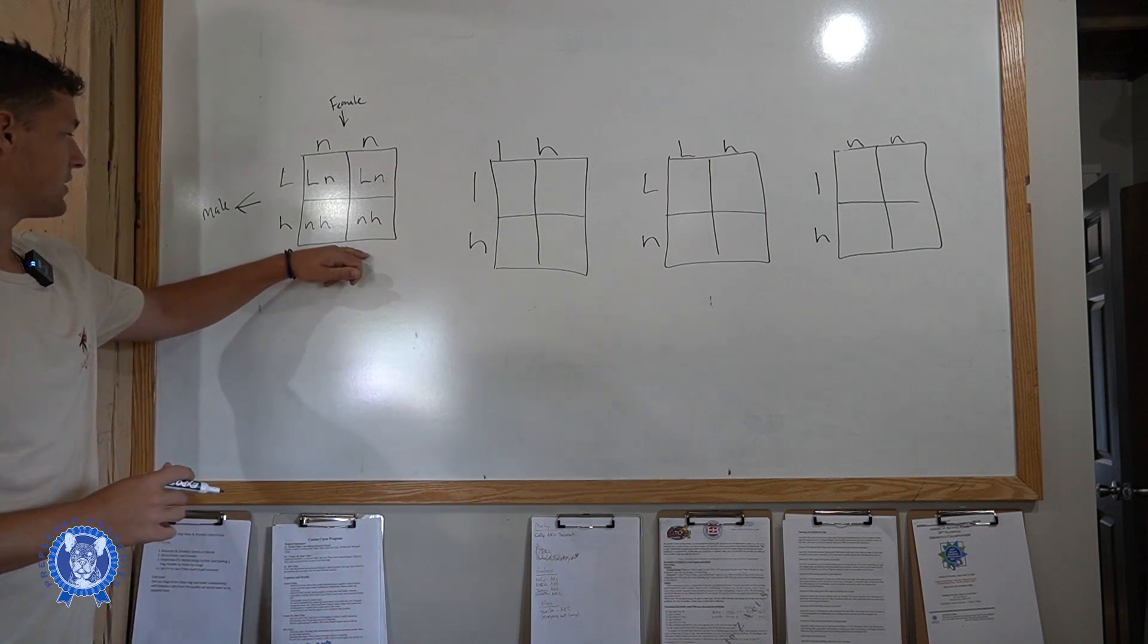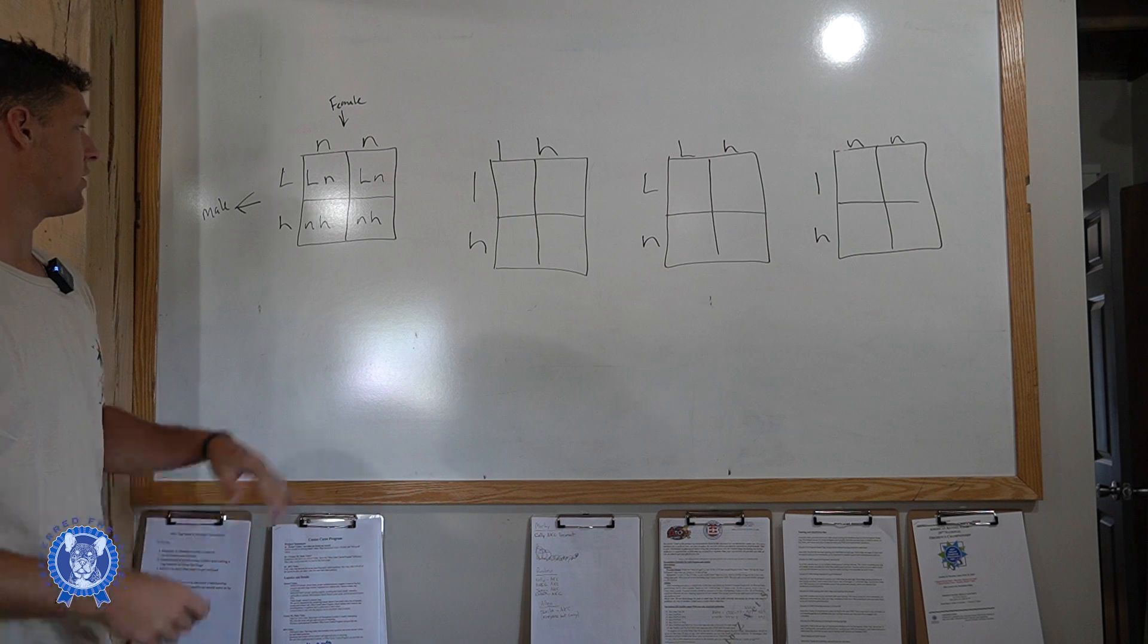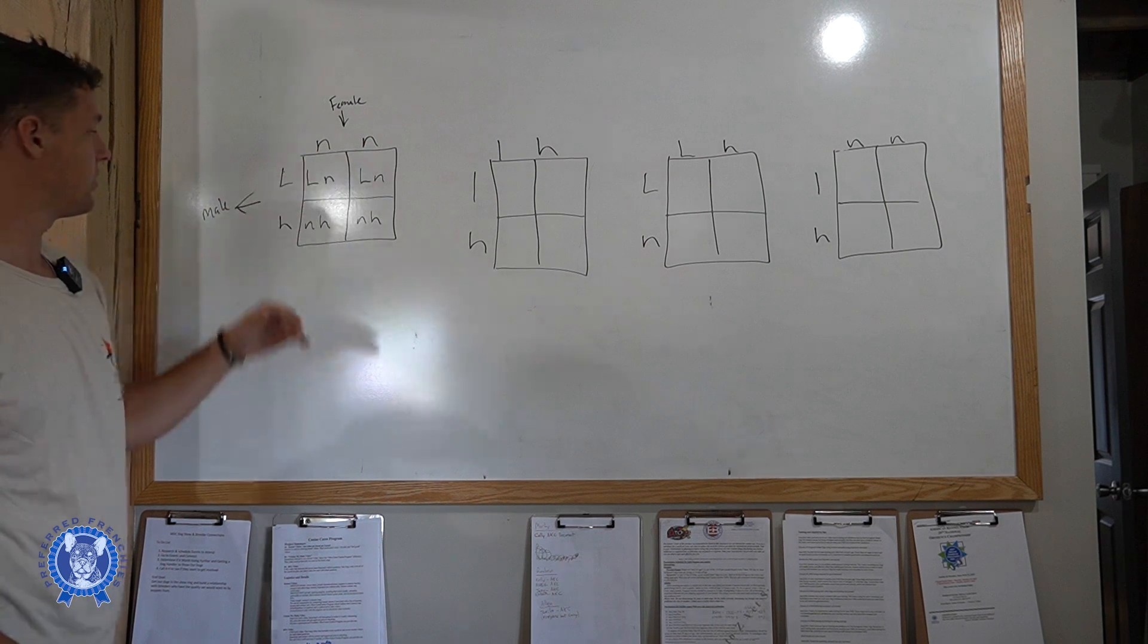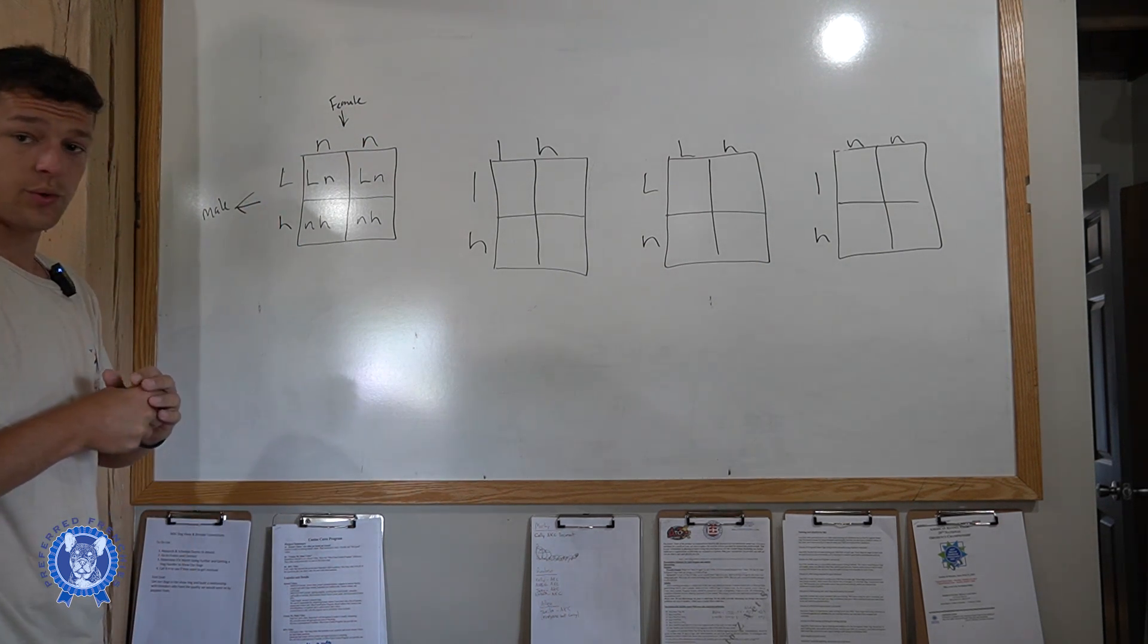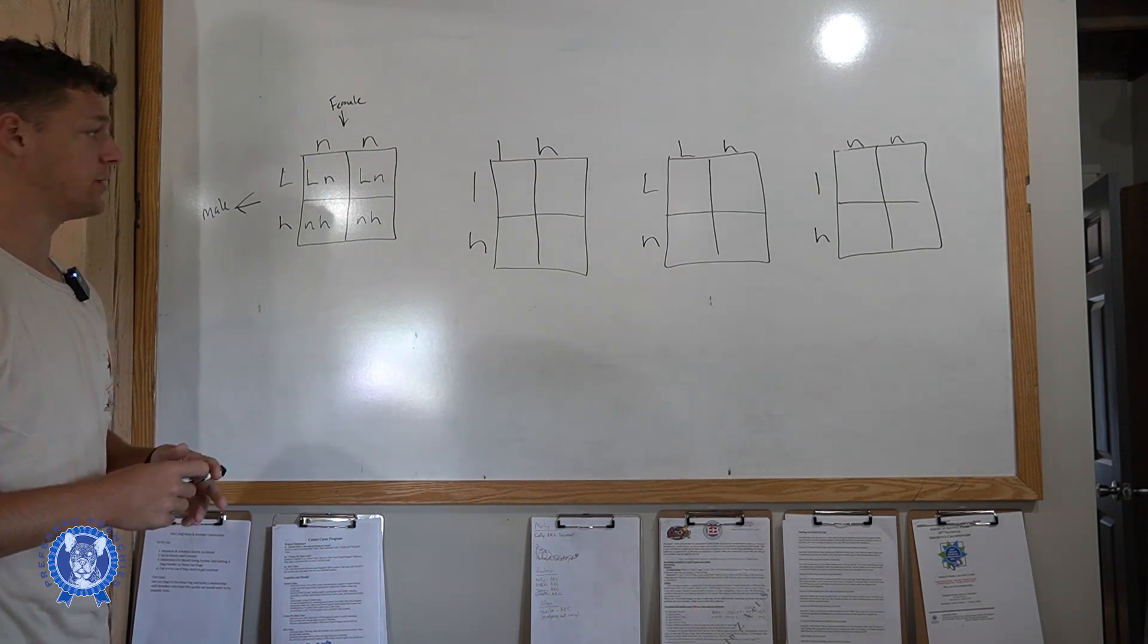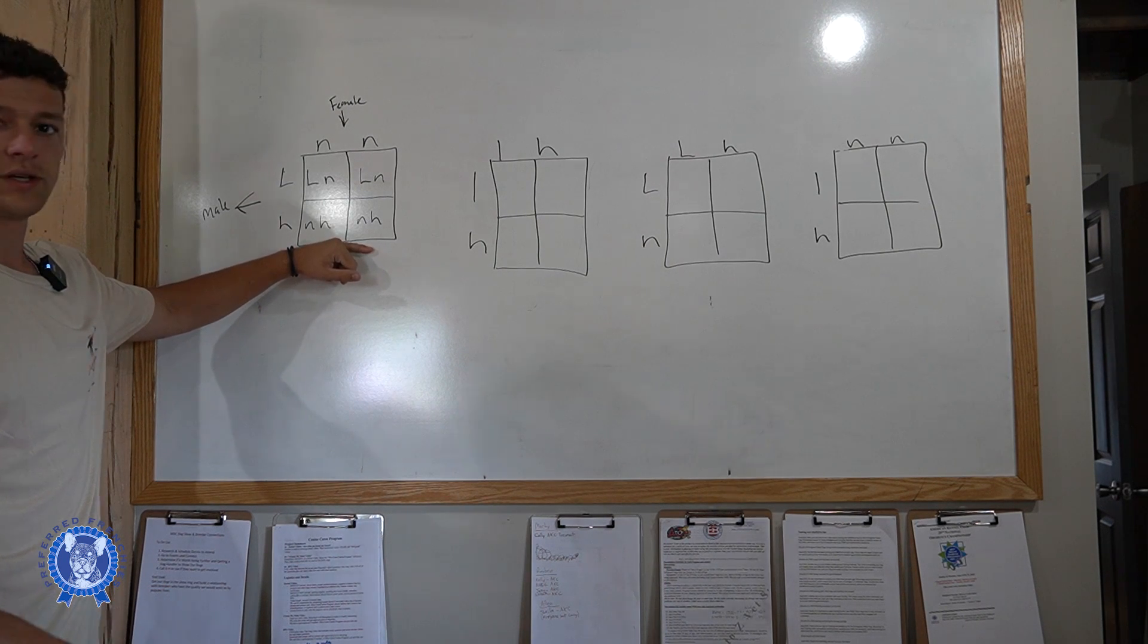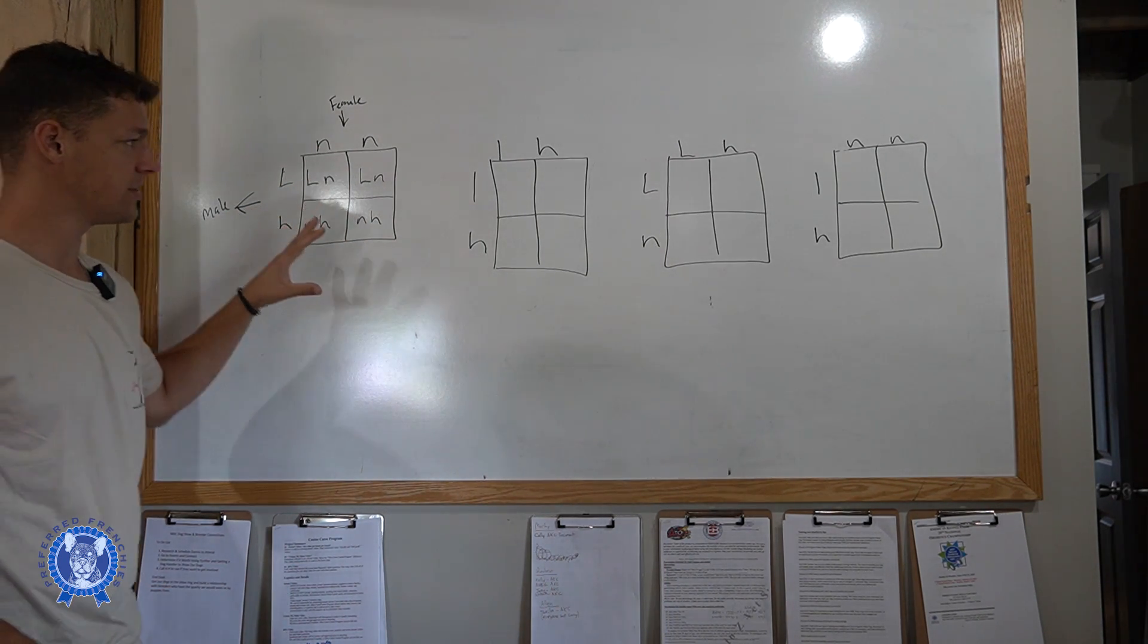So we have a non-fluffy male or female bred to a fluffy carrier here. So just going through, connecting each one. Right here we have a non-fluffy, non-fluffy, and then we'd have two fluffy carriers here. So basically that would give you a shot of having two fluffy carriers out of a combination of having a fluffy carrier bred to a non-fluffy. So you'd have a 50% chance of having fluffy carriers.